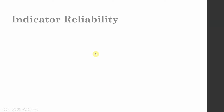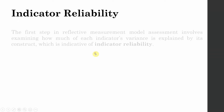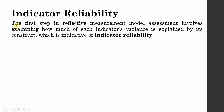How do you assess indicator reliability? The first step in reflective measurement model assessment involves examining how much each indicator's variance is explained by its construct, and this is called indicator reliability.